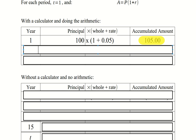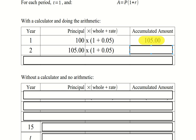That $105 is how the second year is going to start. The second year starts with a principle of $105. Over the course of the year, we earn our principle back and 5% interest, giving us $110.25. Notice that $0.25 — that's the interest on the $5 that we earned in the first period. It's interest on interest. That's where the word compound interest comes from.